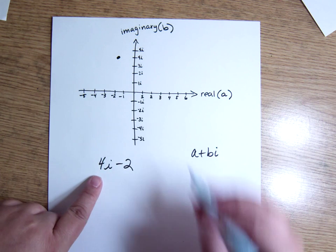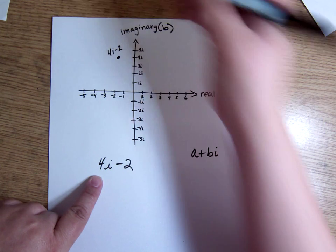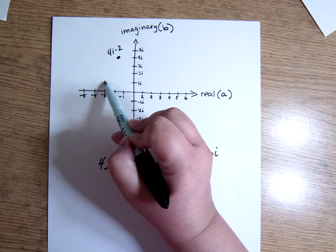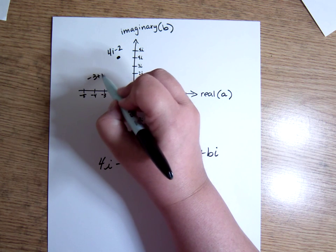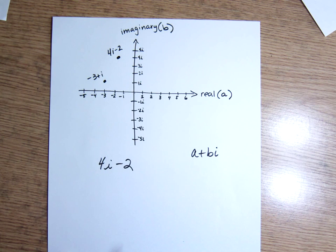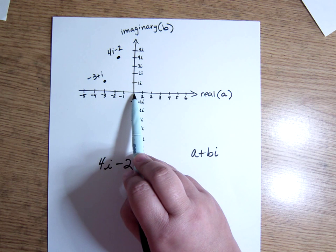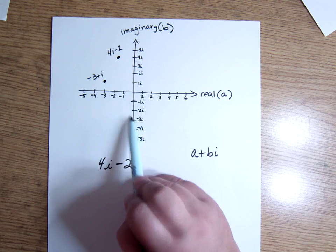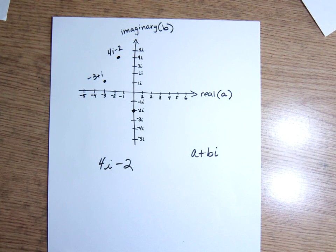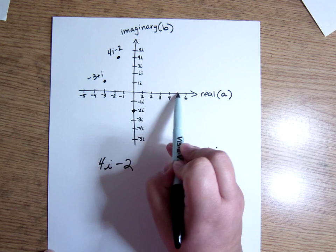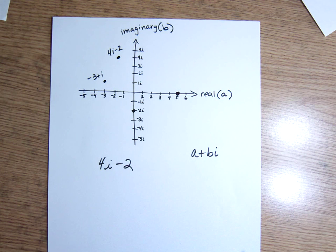Negative 3 plus i was another one. Negative 3, 1, 2, 3 plus 1i is right here. Negative 2i. What's the real part of that? The real part of that is 0. So that means don't go to the left and right. Negative 2i is down 2i. It's on the imaginary axis. And the number 5 is just a plain real number. There's no imaginary part, so it's just on the horizontal axis. So it's 1, 2, 3, 4, 5. And that's it.